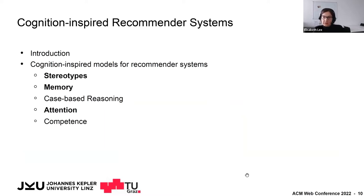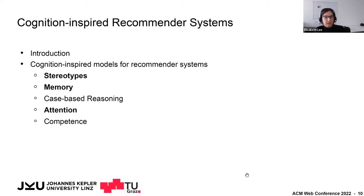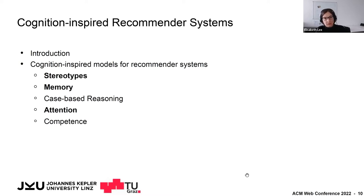I would like to start with cognition-inspired recommender systems. For this field, I'll give a short introduction to what cognitive science involves and what the main research questions are. Then I will show examples where cognitive models have been used to design or evaluate recommender systems. In this presentation, we will discuss stereotypes, memory, case-based reasoning, and attention as important cognitive process that shapes what items we devote our focus to.